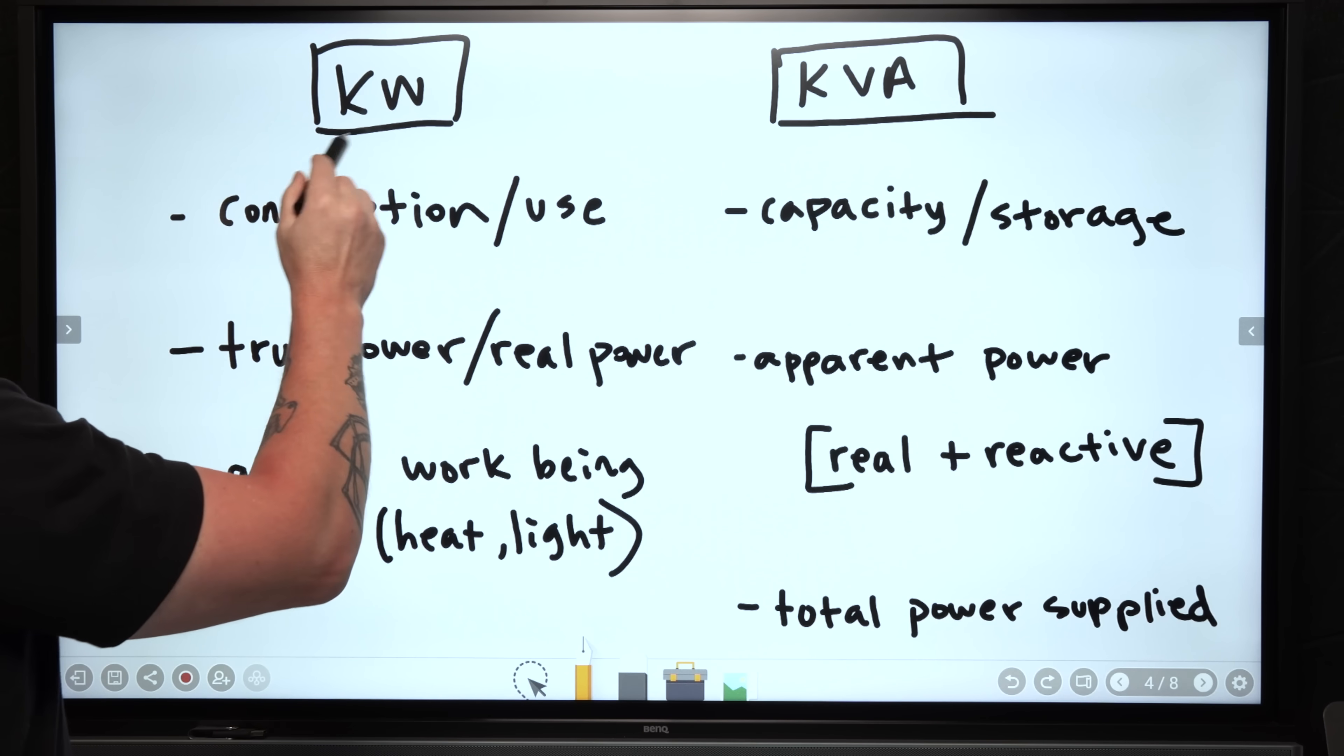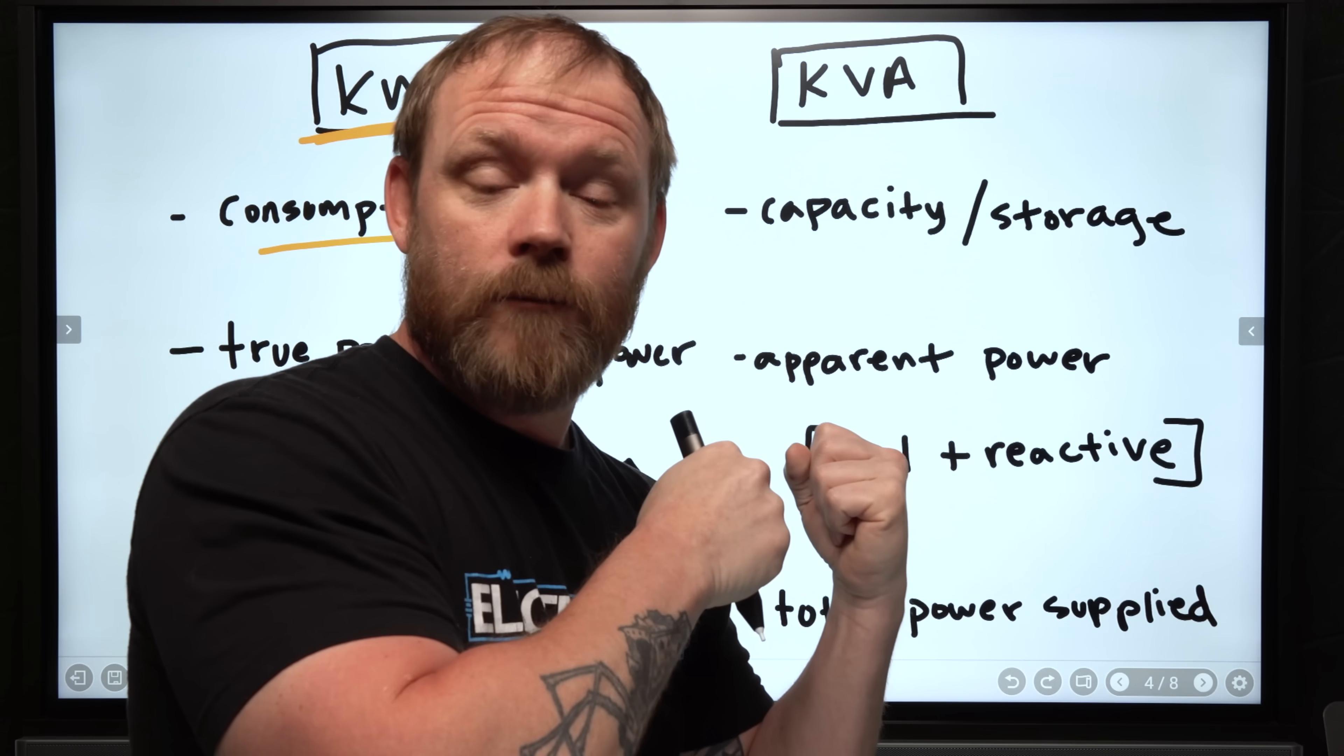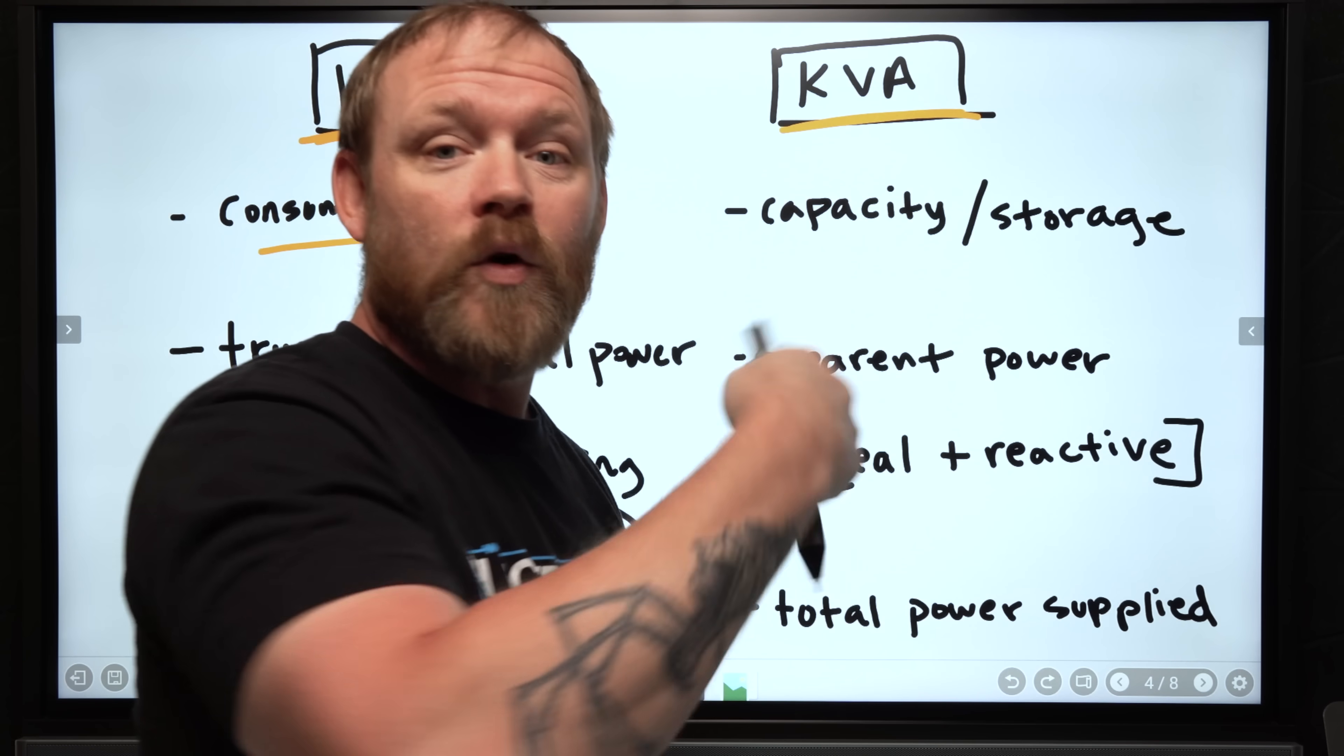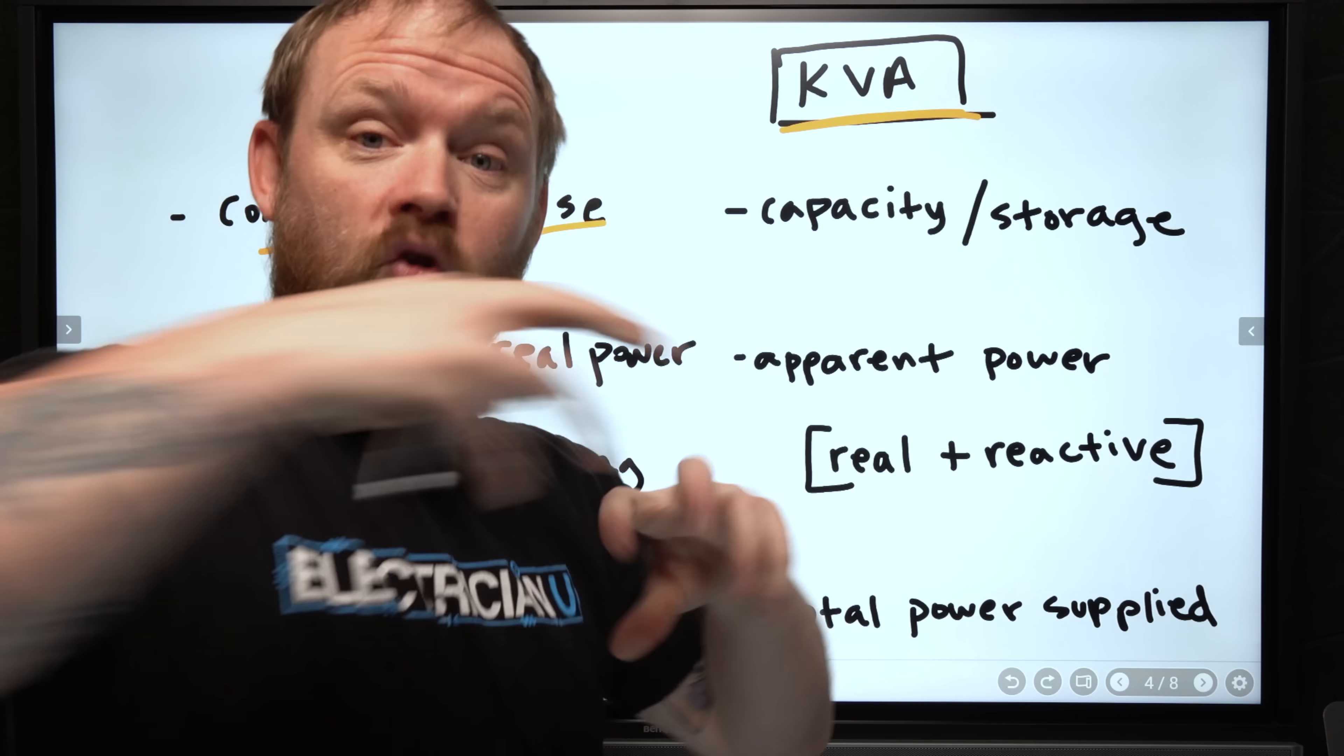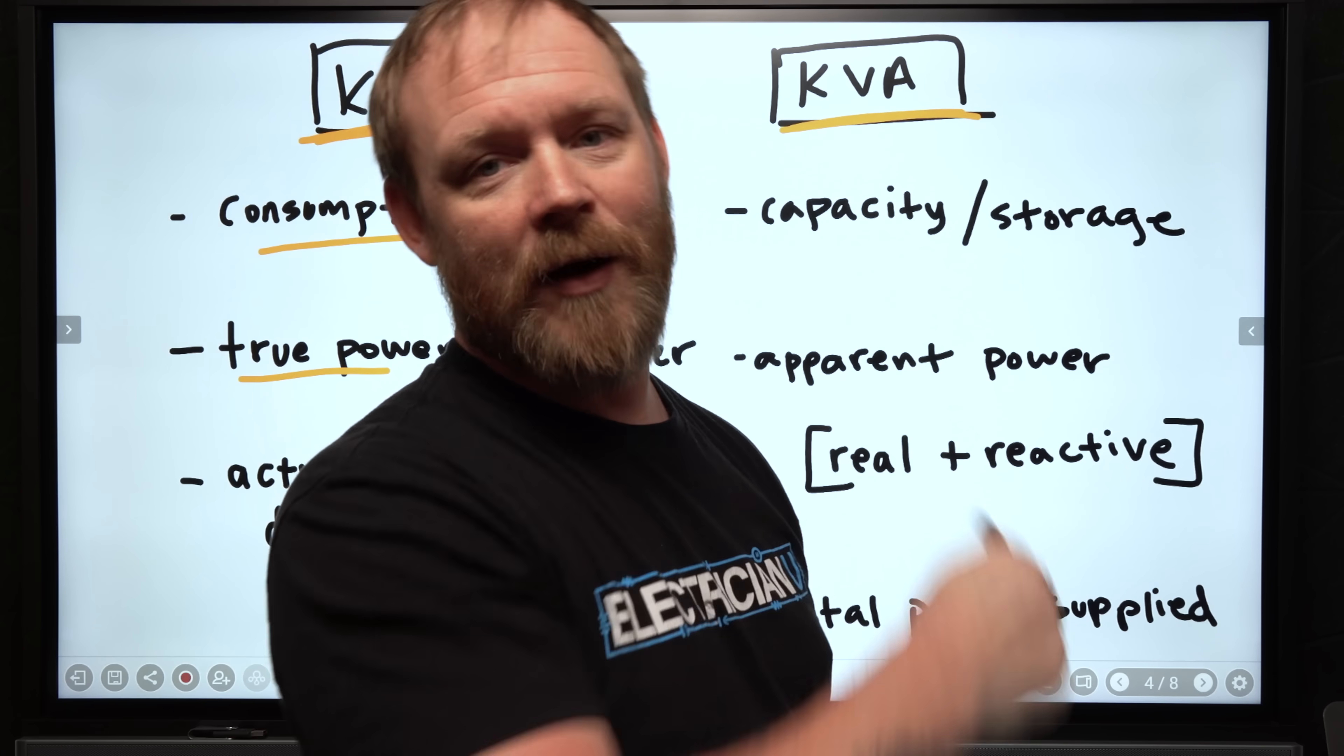So a kilowatt, when we talk about kilowatts, we're talking about consumption or use. How much is a load using? Again, we're kind of at the load. When we talk about KVA, we're talking about what is the capacity, what is being supplied? You could think of it as storage too. How much stored up capacity do we have to be able to transfer energy to a load? When we talk about KW or watts, we're talking about true power or real power. Some people might call it active power.